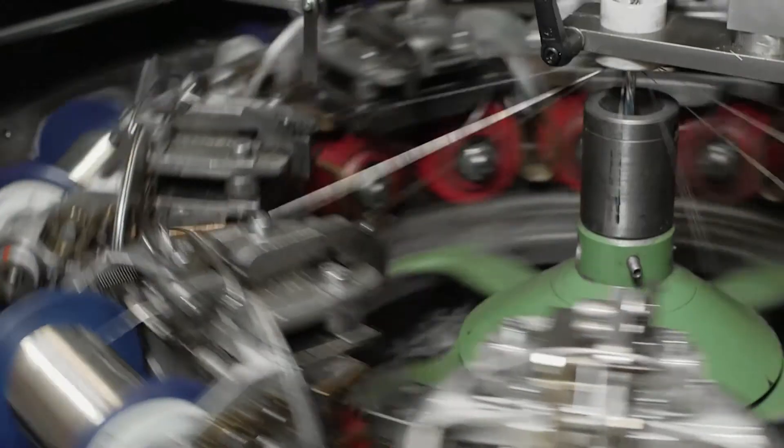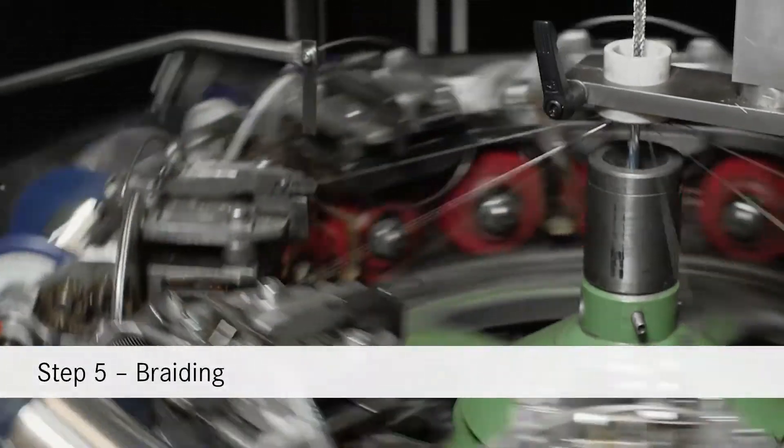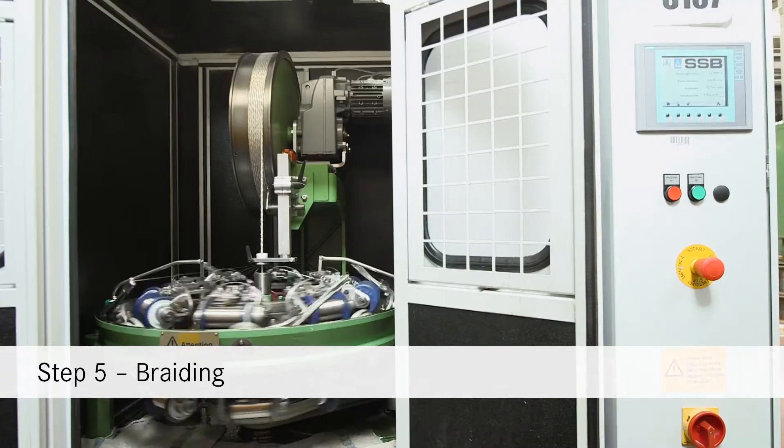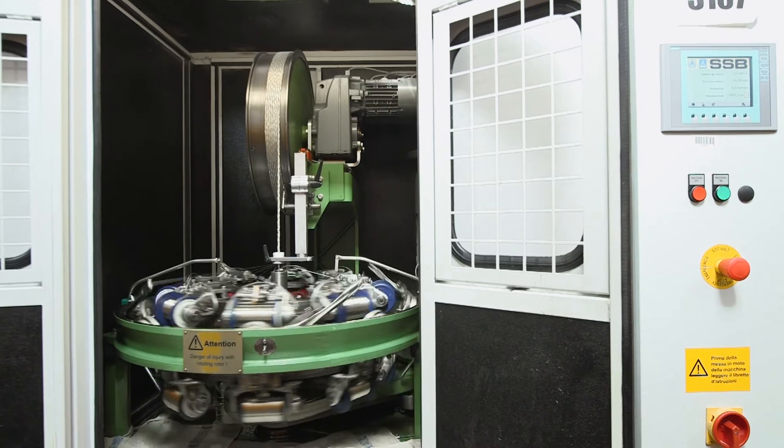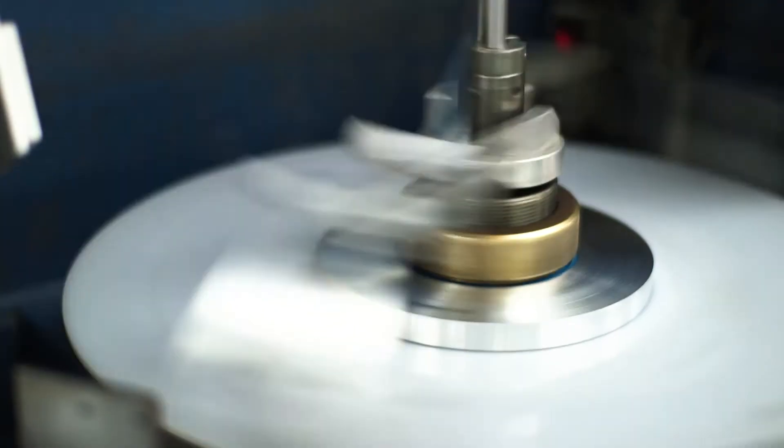In the following step, the braiding, the stranded cable core is then wrapped with braided copper or tin-plated copper to protect the cable against electromagnetic interference.